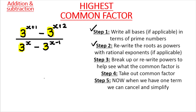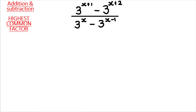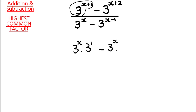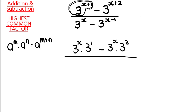Step three: break up or rewrite powers to help see what the common factor is. Some students don't need to apply this step on paper — they can think about it in their head. But I'm going to apply it here. Three to the power of x plus one can be written as three to the power of x multiplied by three to the power of one. And three to the power of x plus two can be rewritten as three to the power of x times three to the power of two. You're using the exponent rule in reverse.